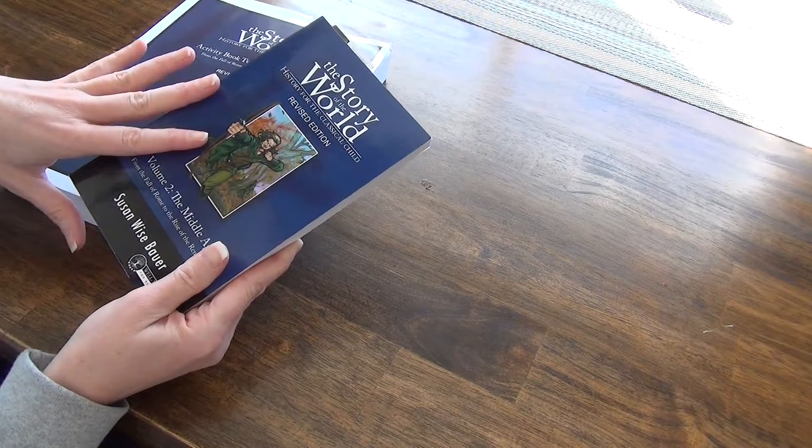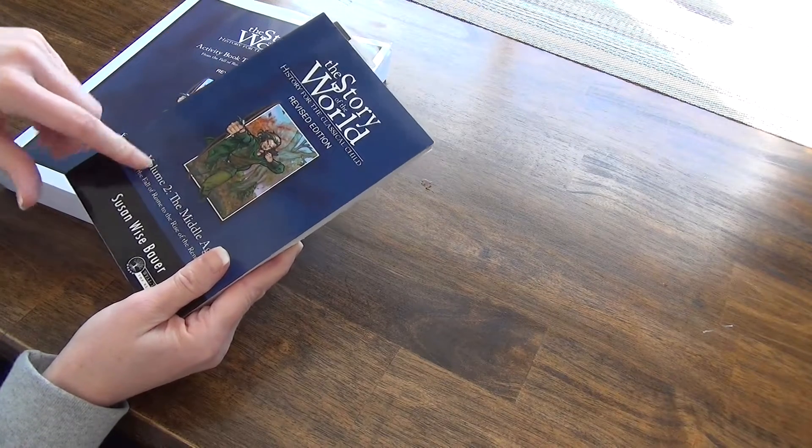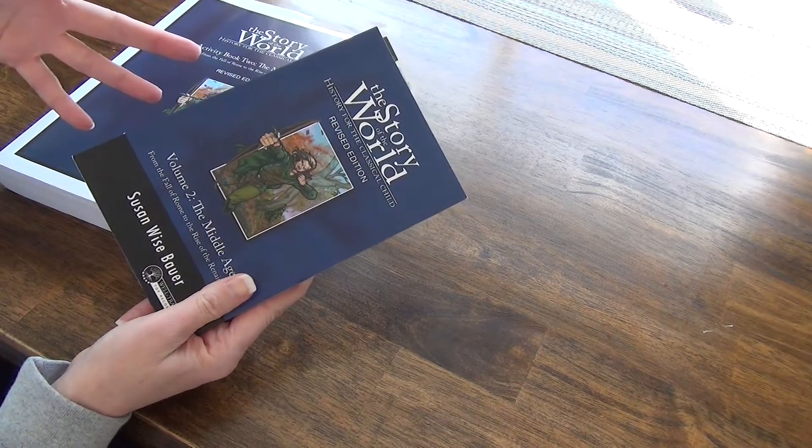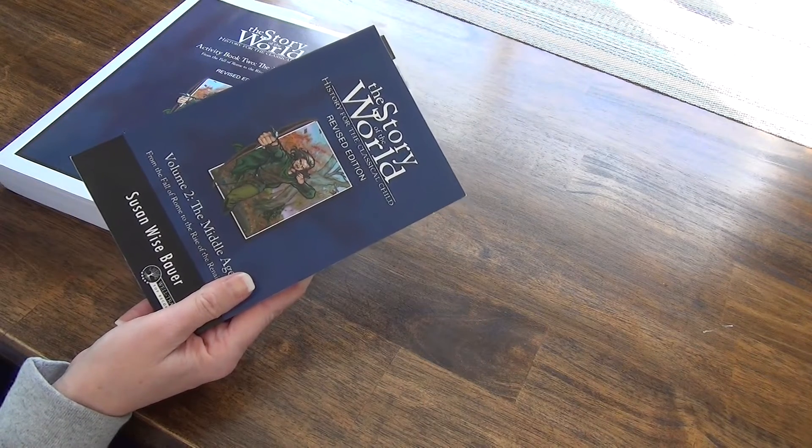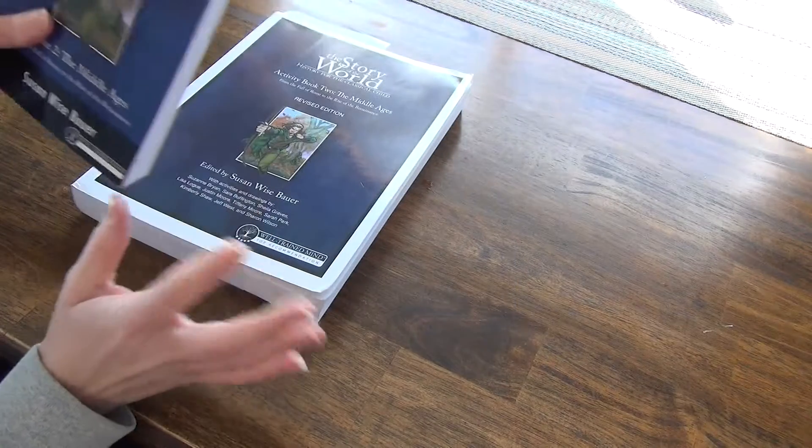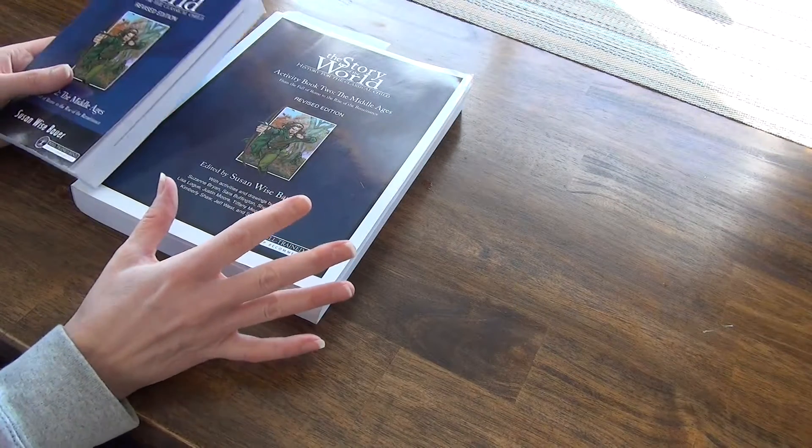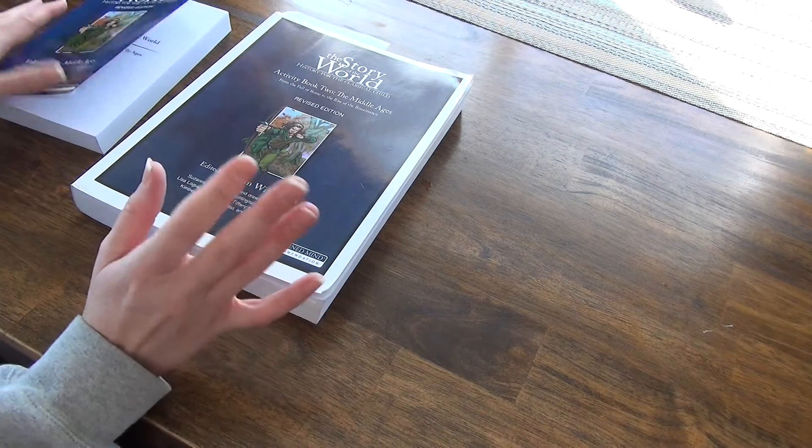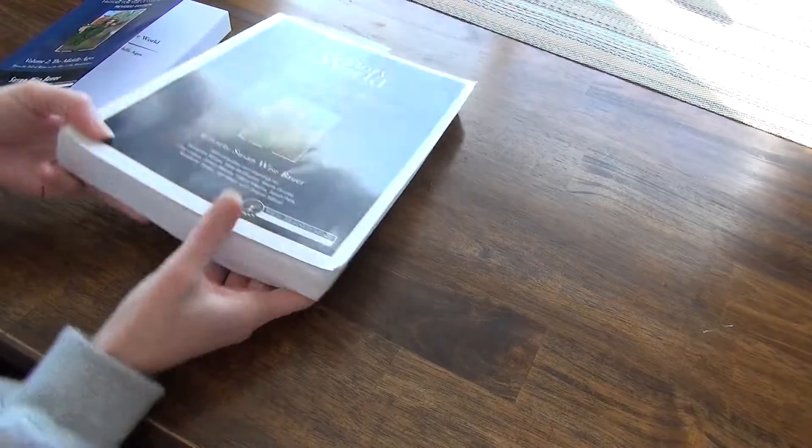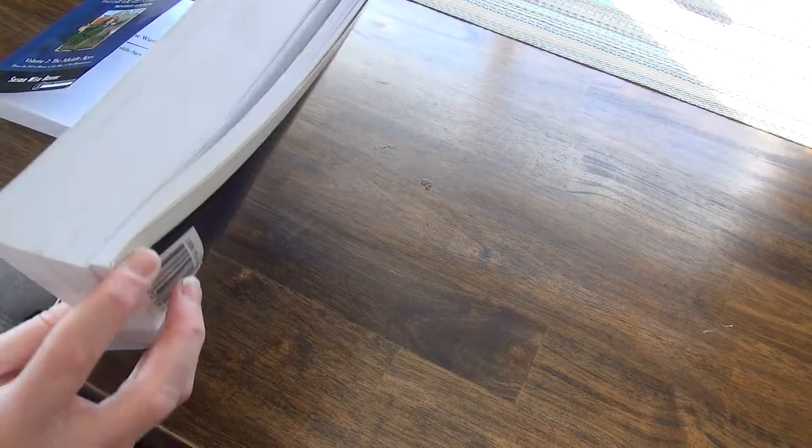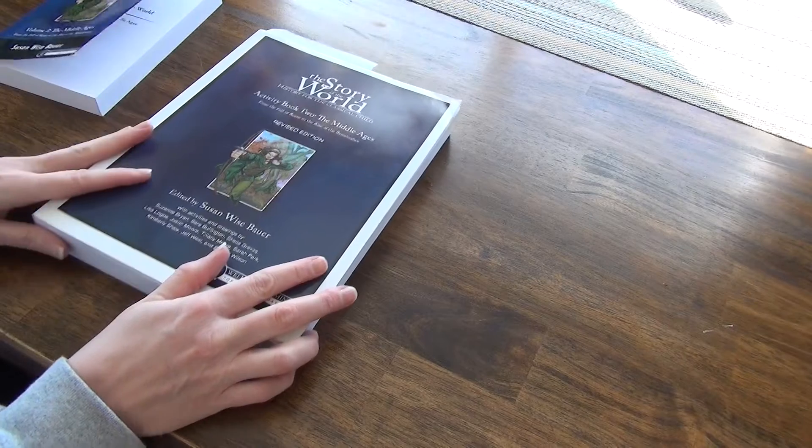Then I decided I would just get the actual reader. But then here recently, I found that I'm kind of pulling for extra resources a lot more. And I decided to see if I could find an activity book used because when possible, I try to purchase used to save money. And I did. I was able to find this used. The only problem is it had this big bend in the cover, which is fine.